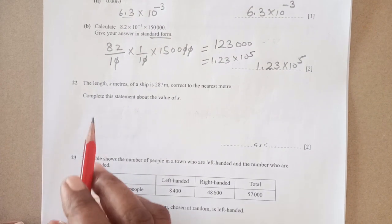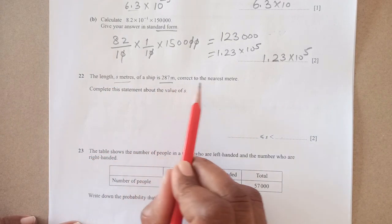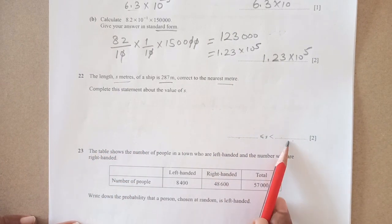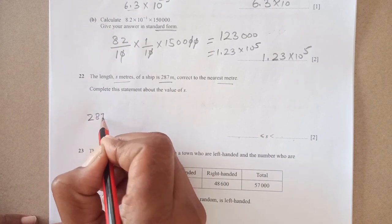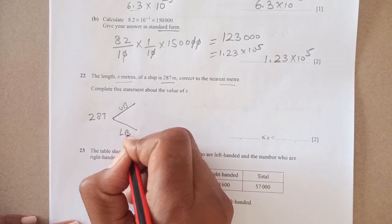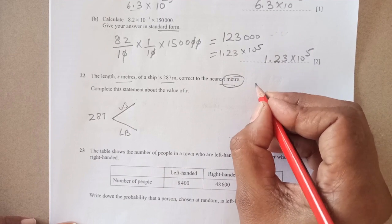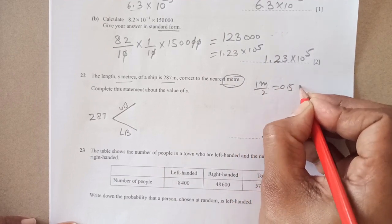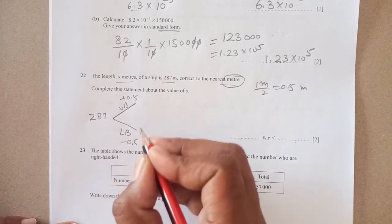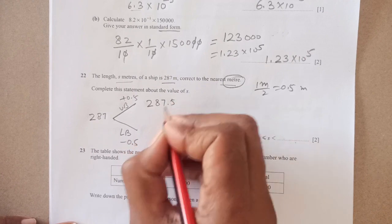Number 22: the length of the ship is 280 meters correct to the nearest meter. Complete the statement for lower bound and upper bound. For the upper and lower bound, we have 1 meter to the nearest meter, half of that is 0.5 meters. We add 0.5 and subtract 0.5, making it 280.5 and 279.5. Upper bound is 280.5, lower bound is 279.5.